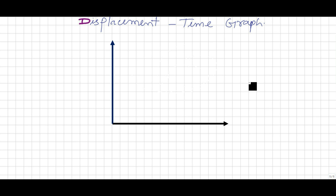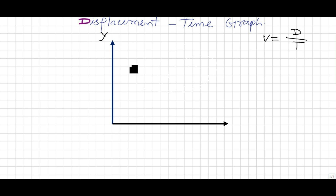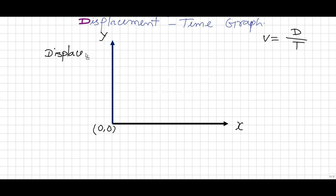We have read about displacement, what is displacement, what is velocity. We know velocity equals displacement divided by time. Here, this is the y-axis, this one is the x-axis, and this is the origin — that is the 0, 0 position. This is the displacement, taken in meters, and this is the time, in seconds.